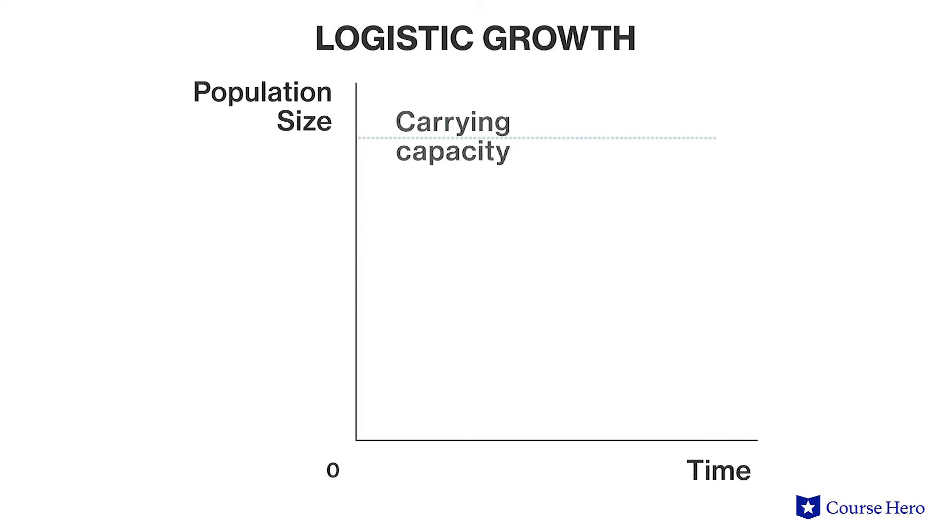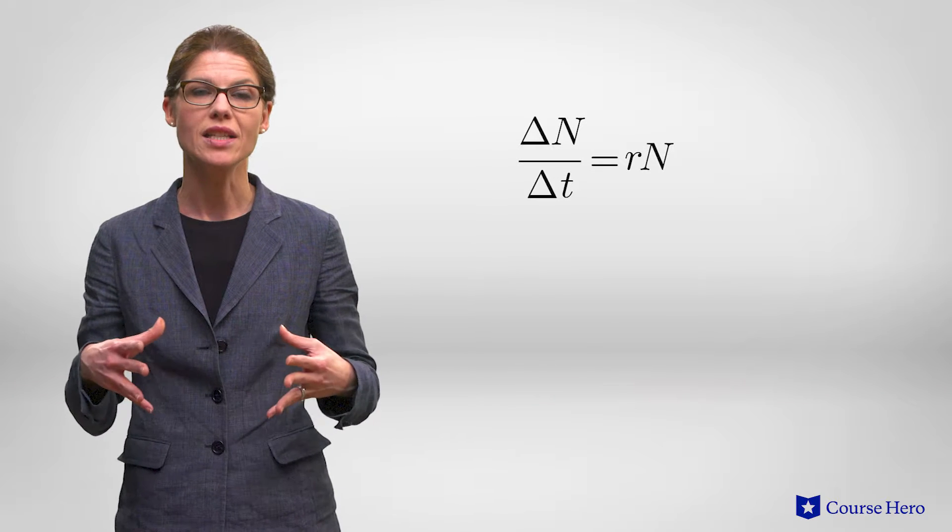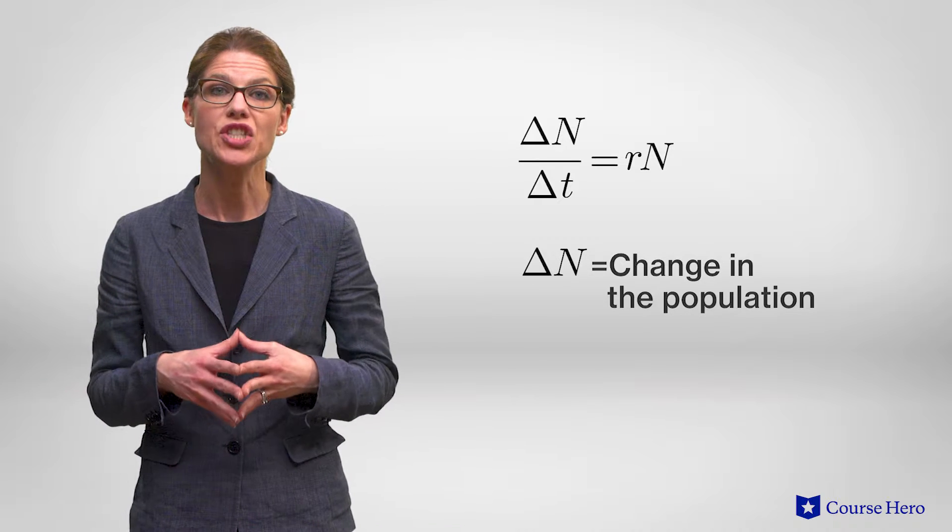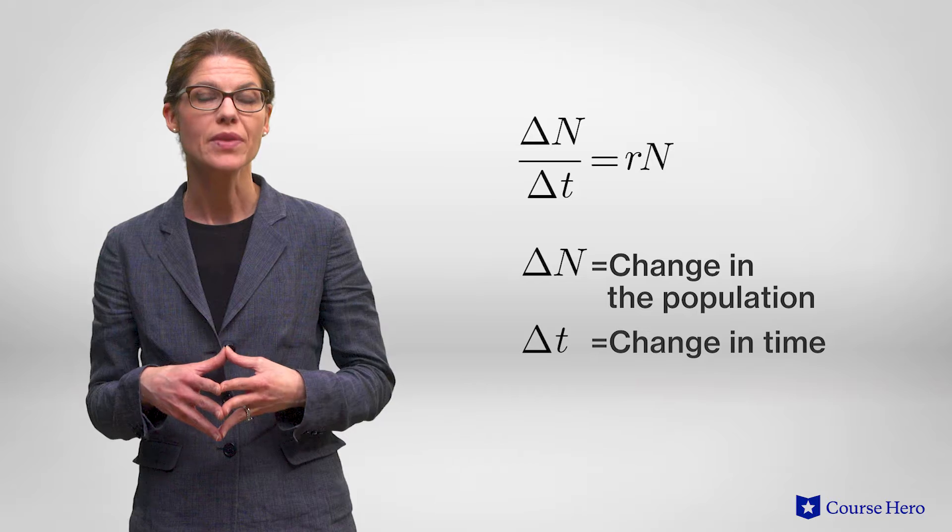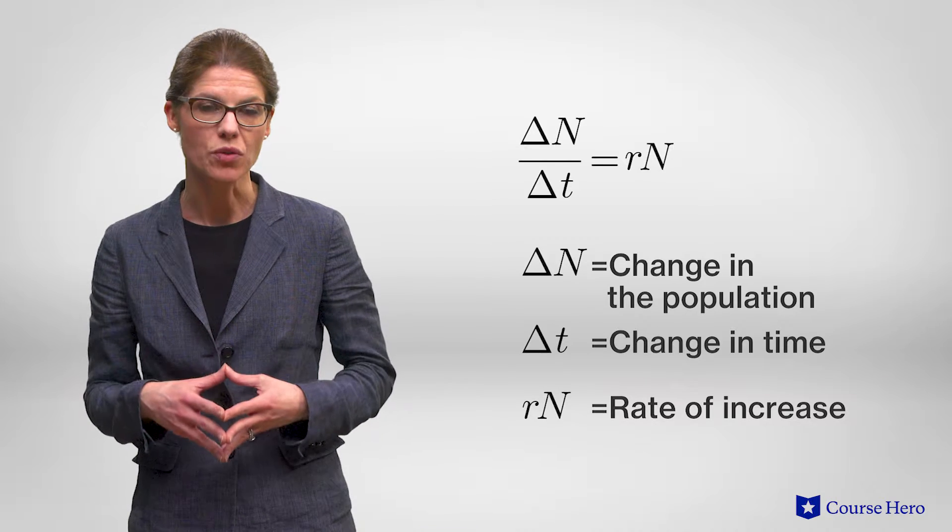Adjustments to the exponential growth equation provide a mathematical solution to a logistic equation. Begin with the equation delta n over delta t equals rn, where delta n is the change in the population divided by delta t, the change in time, and rn is the rate of increase.